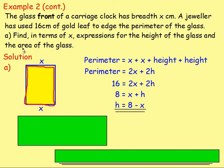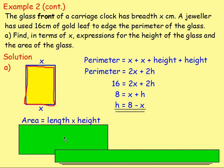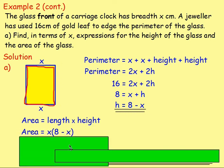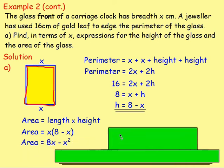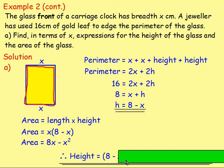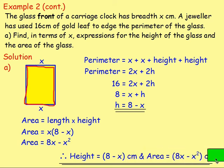Also find an expression for the area of the glass. The area of a rectangle is length times height. The length is x and the height is 8 minus x, so area = x times (8 minus x). Multiplying out gives 8x minus x squared square centimetres. Therefore: height = (8 minus x) centimetres, area = (8x minus x²) square centimetres.